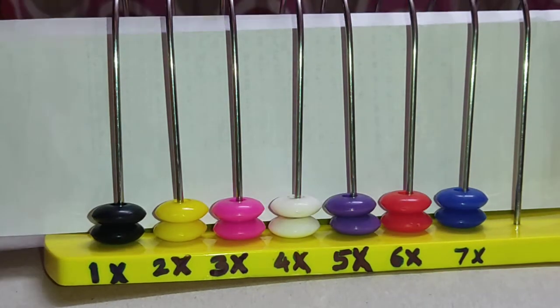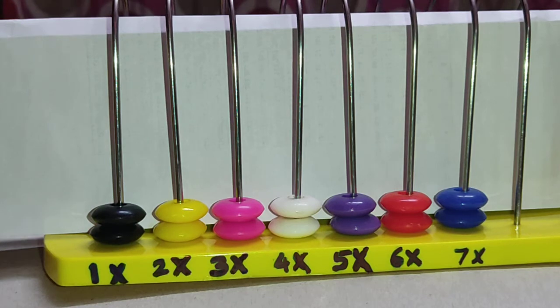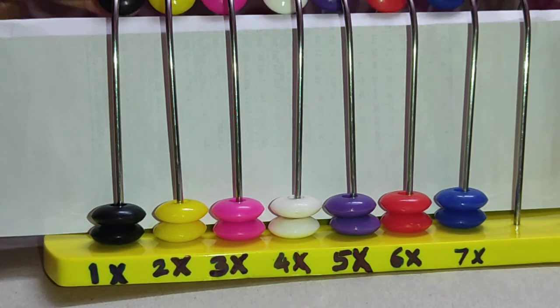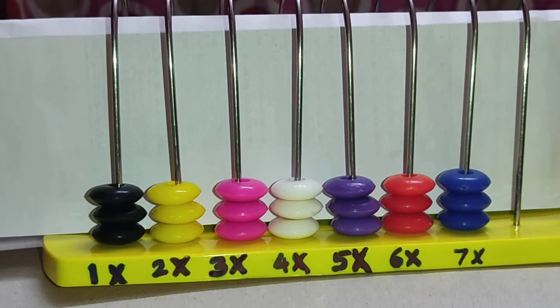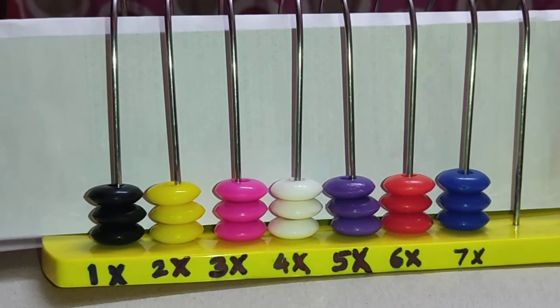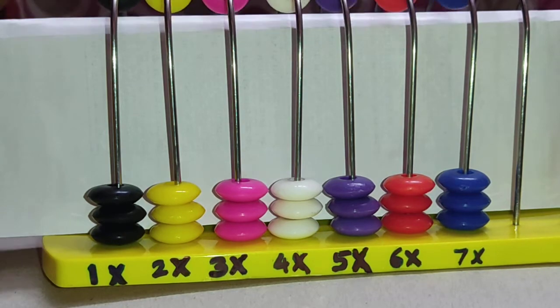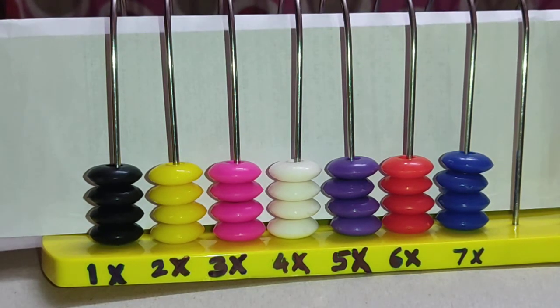7 times 2 is equal to 14. 7 times 3 is equal to 21. 7 times 4 is equal to 28.